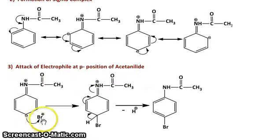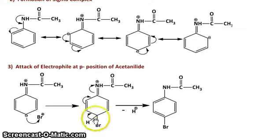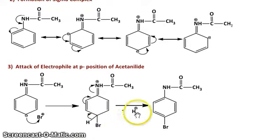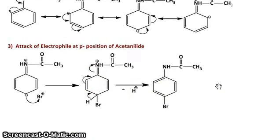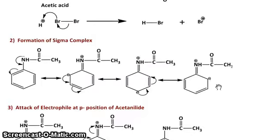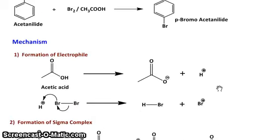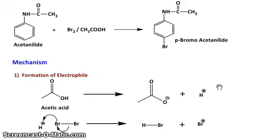The molecular Br+ is attacking at the para position and forming the intermediate. Then deprotonation occurs and this gives para-bromoacetanilide. Hope this video will be helpful to you. If you like this video, then subscribe to my channel and thanks for watching.